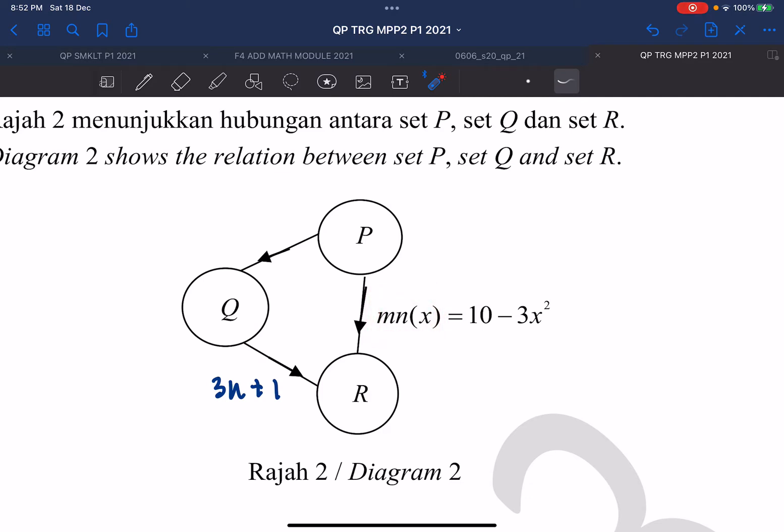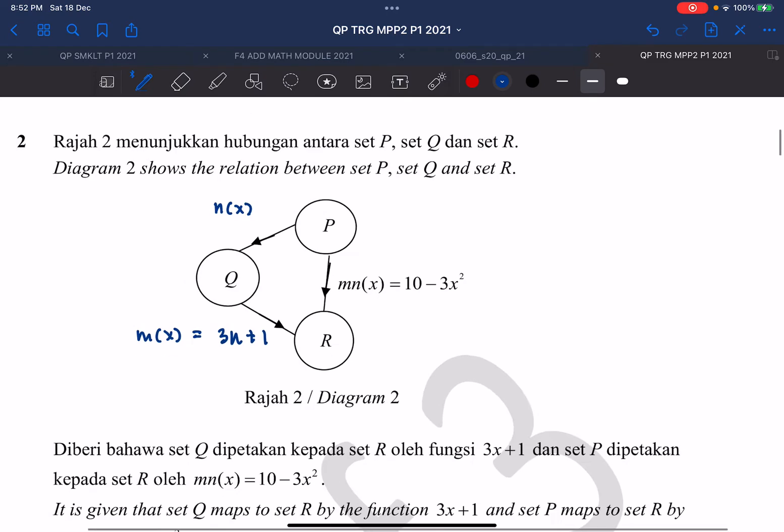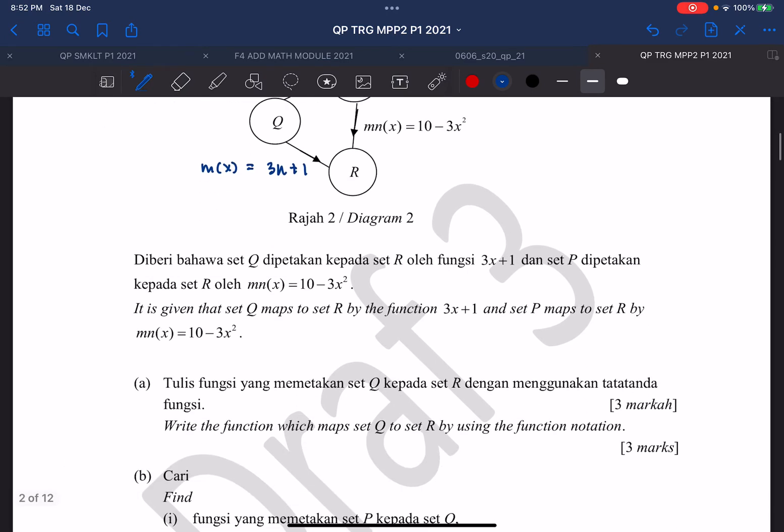So in the MN function, which function comes first? N function or M function? Give you guys a second. It's actually N function comes first. So P to Q will be your N function. P to Q will be your N function, N(x), but we don't know about the function. And Q to R will be our M(x). So the answer for question A will be M(x) equals 3x plus 1.